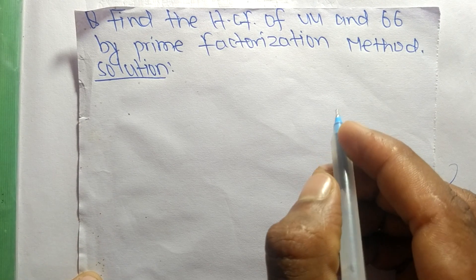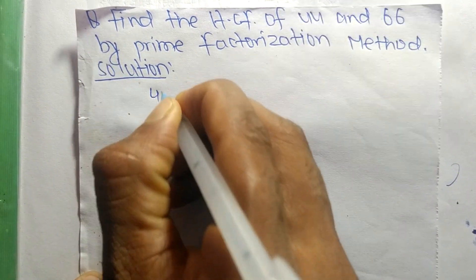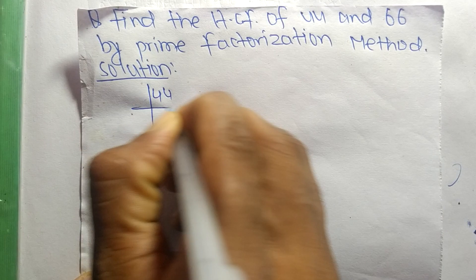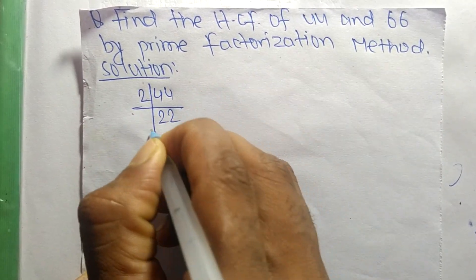First of all, we find out the prime factors of 44. So it is 2 times 22 equals 44.